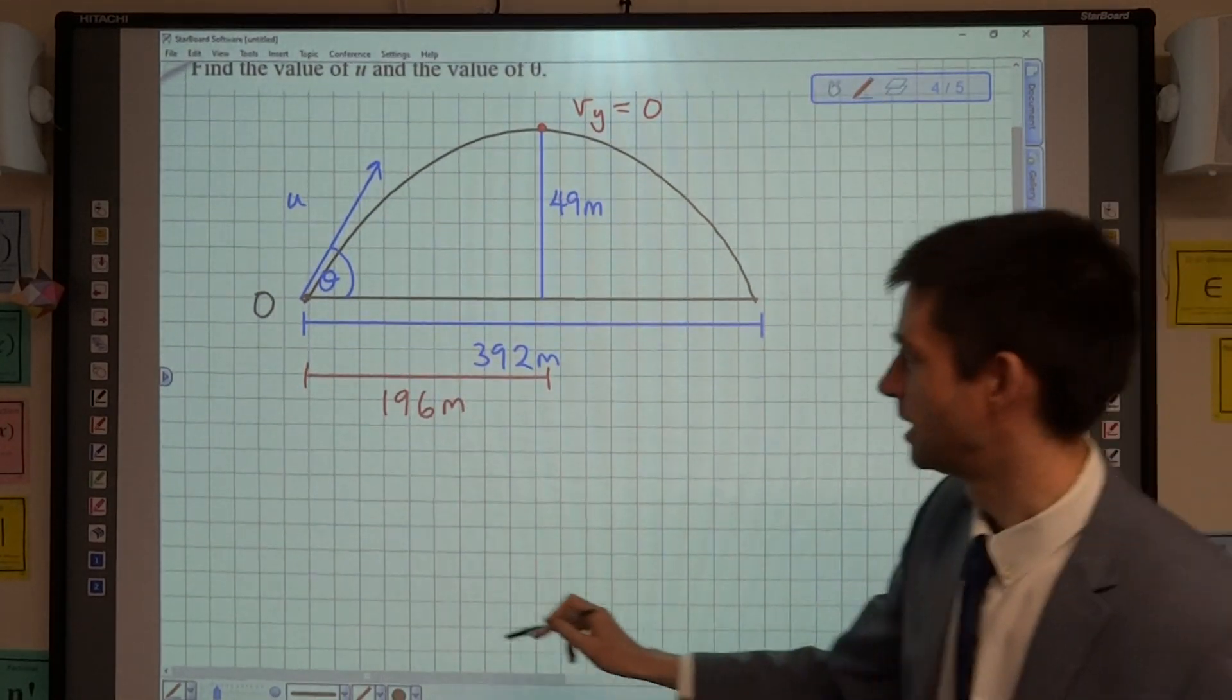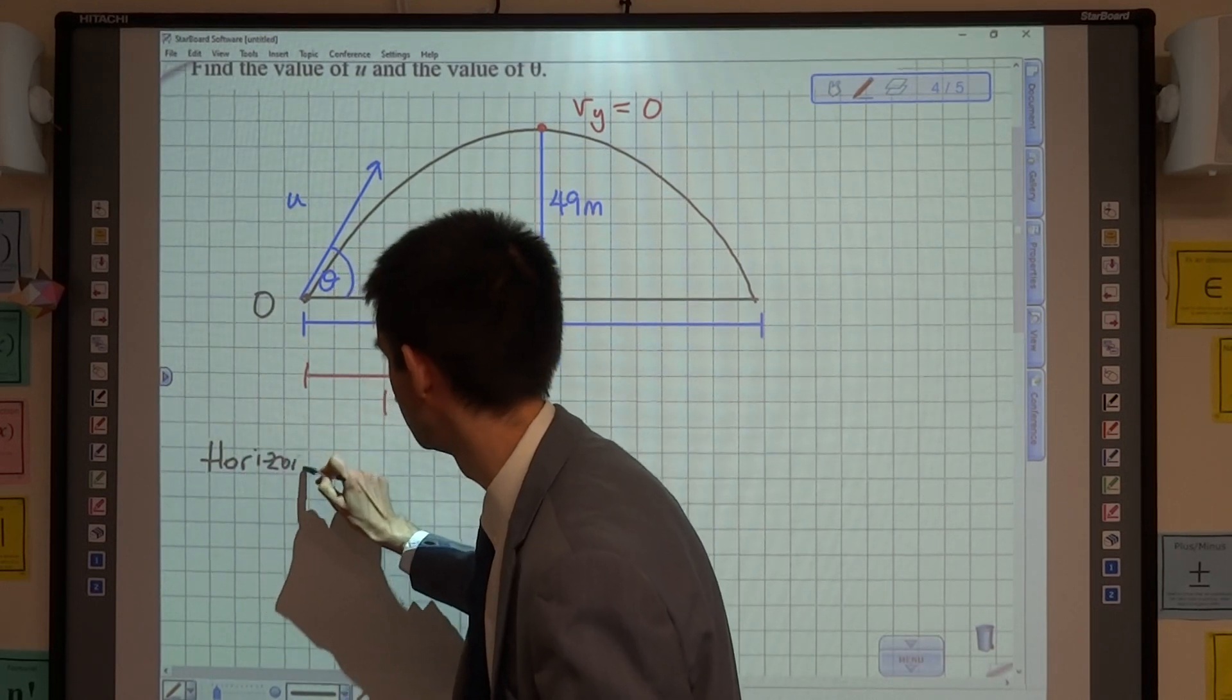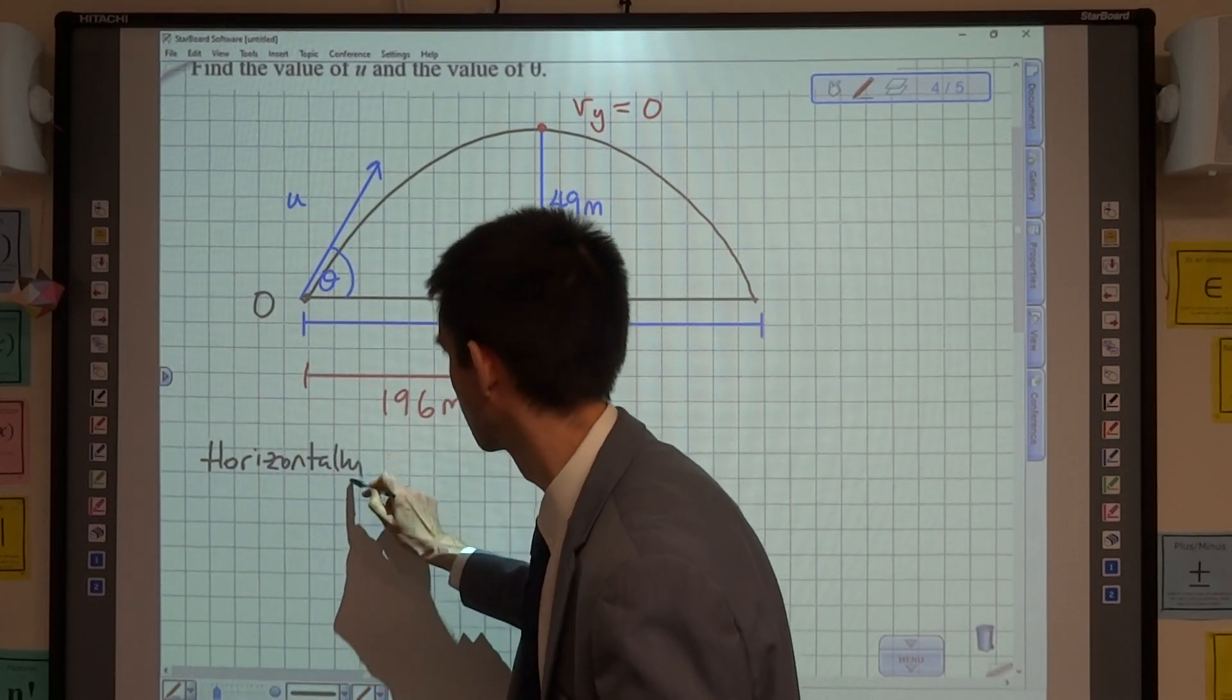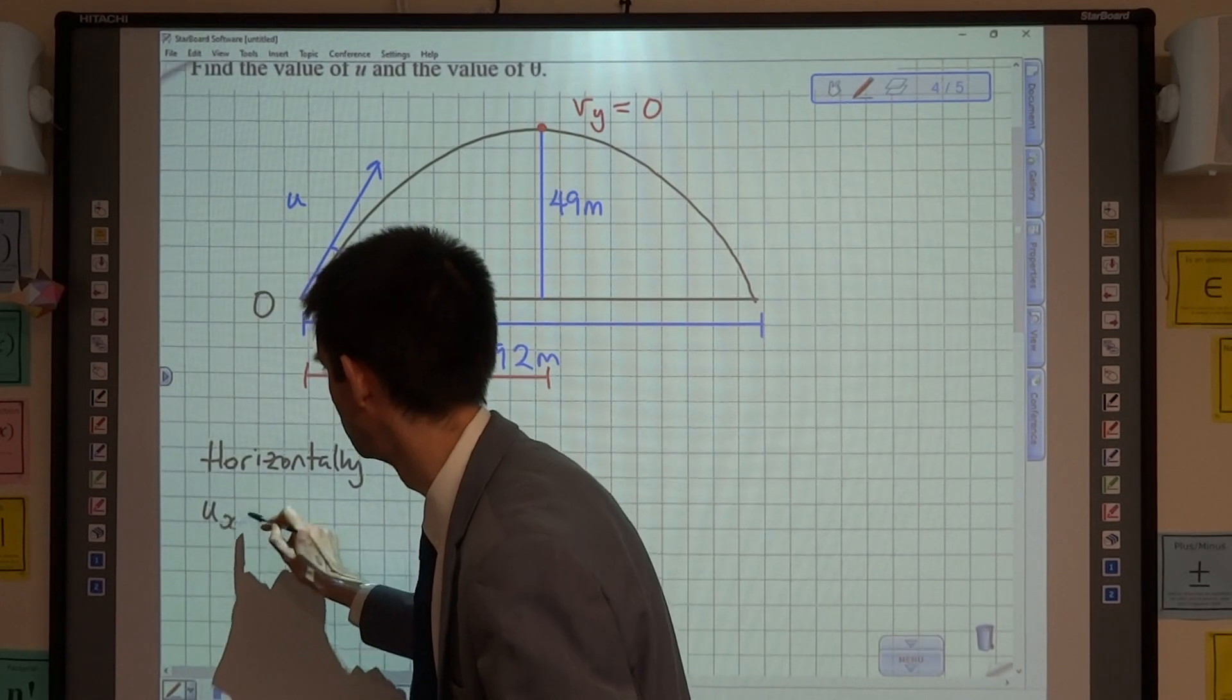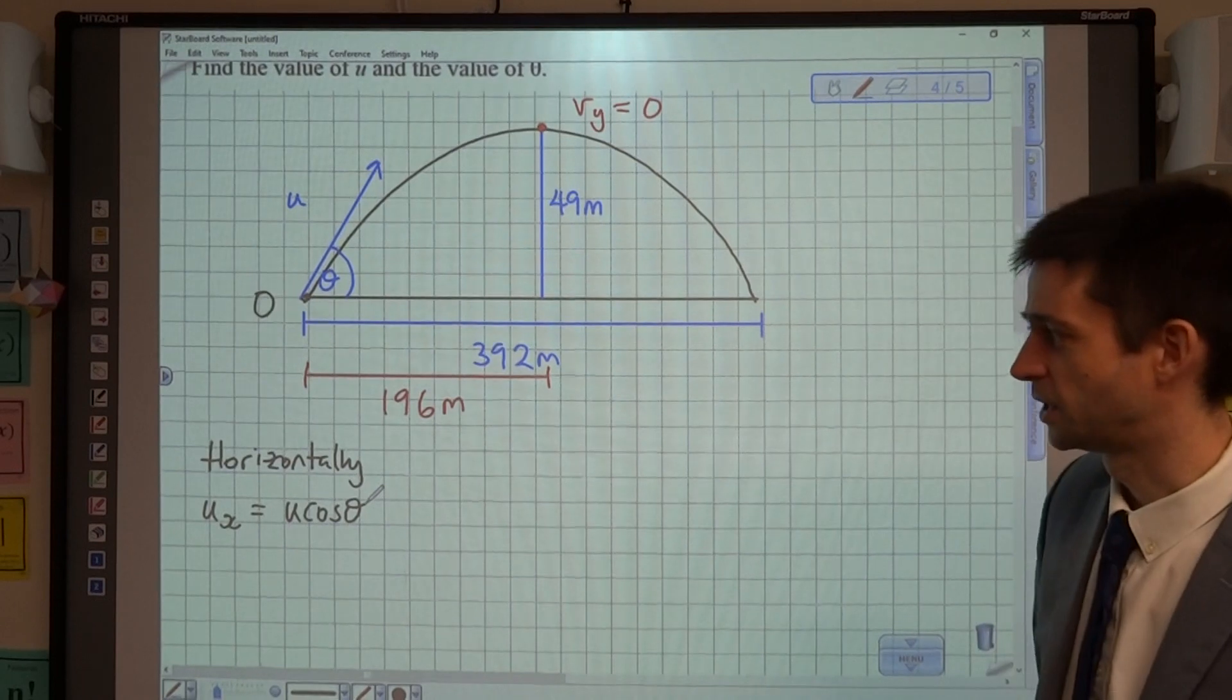Right, let's split the screen again. Let's think horizontal and vertical. So horizontally, on the right-hand side, think what do we know? Well, we know that the initial velocity is u cos theta. We don't know either of those things.